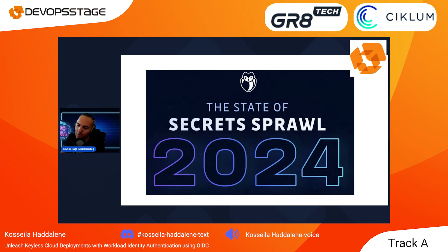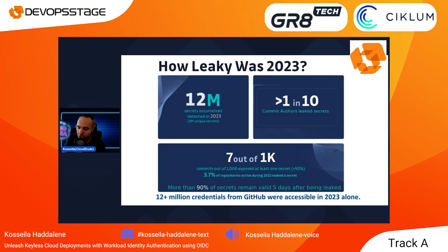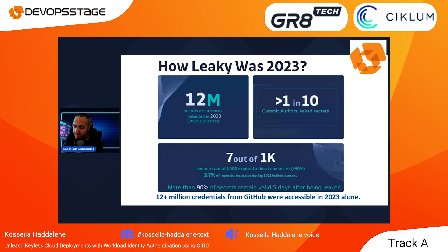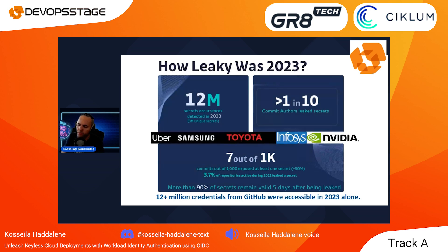Before we start, I want to draw your attention to a few numbers about secret sprawl in GitHub, thanks to a report from GitGuardian. In 2023, there were more than 12 million credentials accessible from GitHub — that's seven out of every thousand commits spilling secrets, putting applications and businesses at serious risk. This makes it clear that hardcoded secrets scattered across environments are becoming one of the biggest threats for enterprises, users, and even states. These incidents don't just hit small businesses but also big corporations like Uber, NVIDIA, LastPass, Samsung, Dropbox, and even Okta — which is supposed to specialize in authentication.